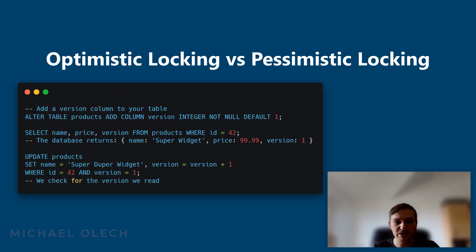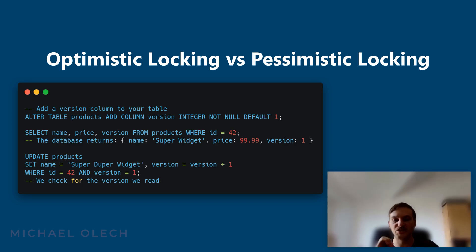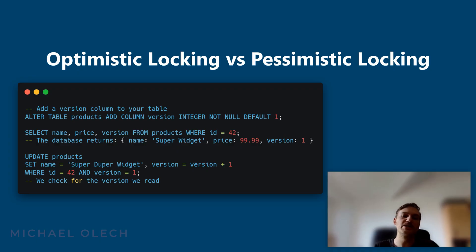You will typically implement optimistic locking at the application level by adding a version integer or a last updated timestamp column to your database table. If another transaction has modified the record in the meantime, its version number will have changed and your update statement will not affect any rows. At this point, your application can handle the conflict — for example, by retrying the transaction or informing the user.